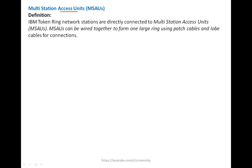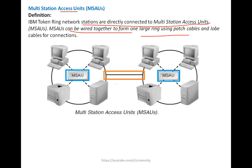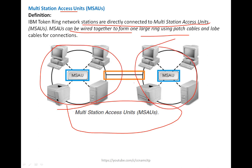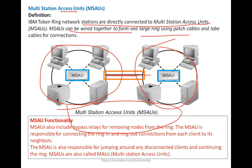Multi-Station Access Unit, also known as MSAU: IBM Token Ring network stations are directly connected to Multi-Station Access Units. MSAUs can be wired together to form one large chain ring using patch cables and lobe cables for connections. The MSAU includes a bypass relay for removing nodes from the ring, and is responsible for connecting the ring-in and ring-out connections from each other.